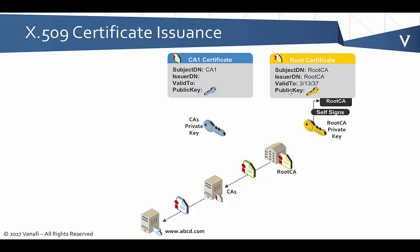Whether that's in the same room or they have to go to a separate facility is dependent on the particular situation. They'll take that certificate signing request, have it validated, and the root CA will validate the public key and everything — there's a lot of process that goes into that. Ultimately, they will sign that certificate for CA1 with the root signing key. When they do this, there is a lot of security around this, because if somebody can validate that signature with the public key, then they know that this is a valid certificate that's been issued by the root CA.